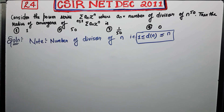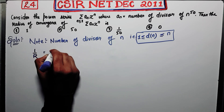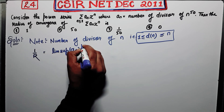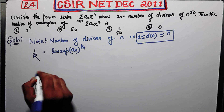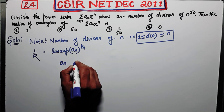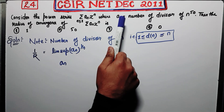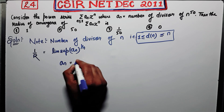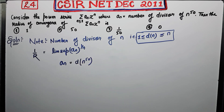We need to find the radius of convergence R for this series. Recall that 1/R equals the lim sup of |a_n|^(1/n). Now, a_n is the number of divisors of n to the power 50, so a_n = d(n)^50.